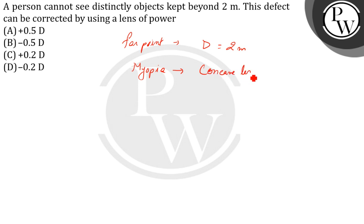Now we have to find the focal length. f equals minus D, which equals minus 2 meters. The formula for power is P equals 1 by f.